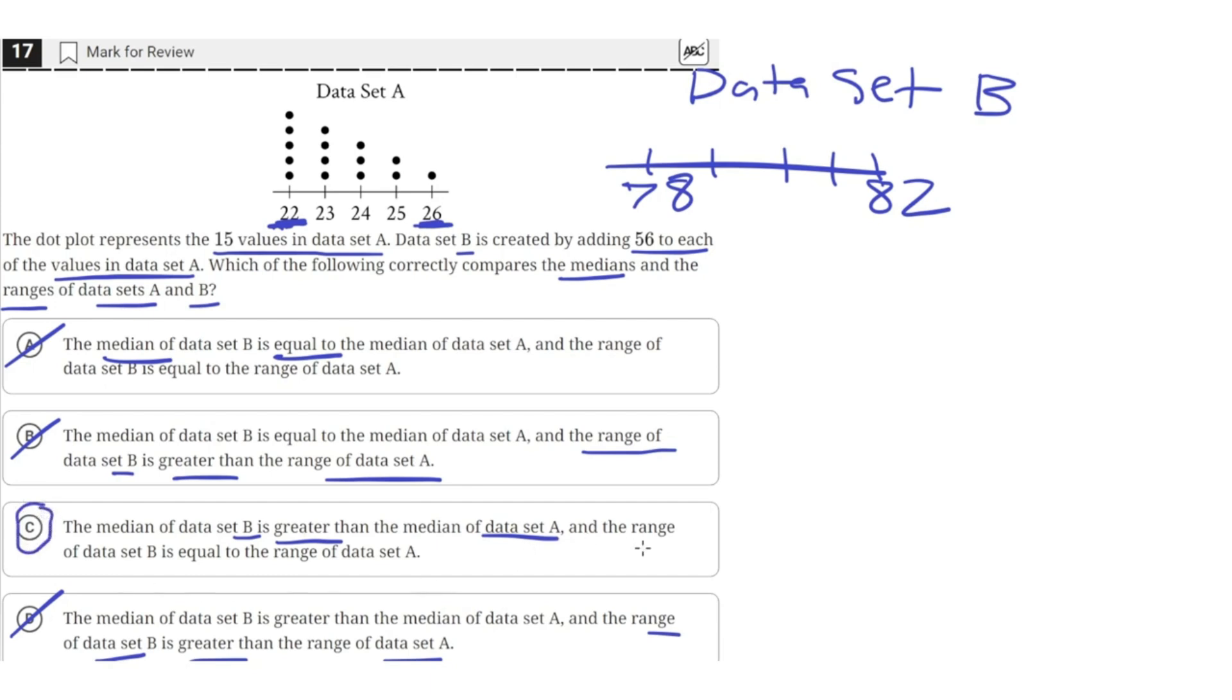Because the median is larger but the range is still the same, so C is the correct answer.